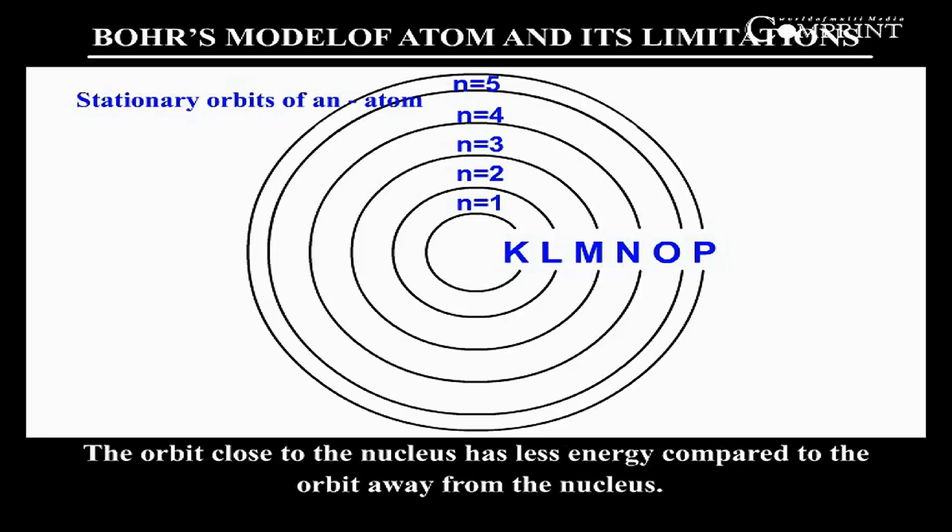The orbit close to the nucleus has less energy compared to the orbit away from the nucleus.